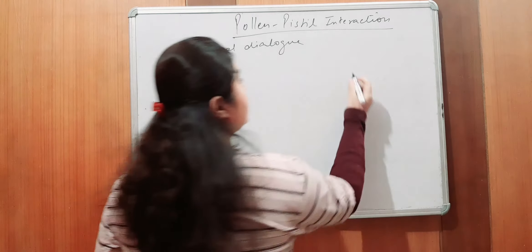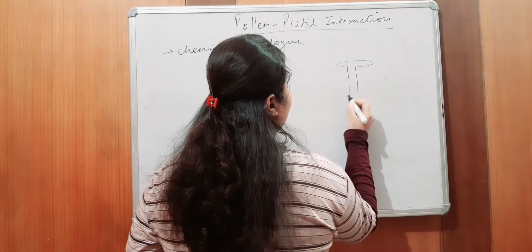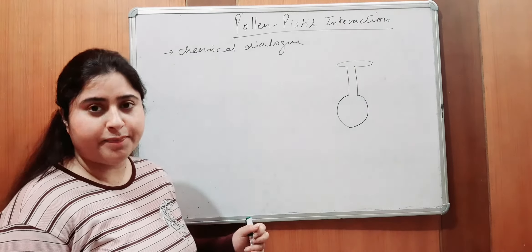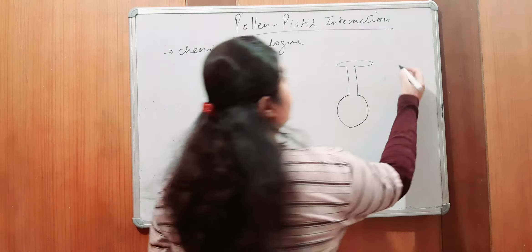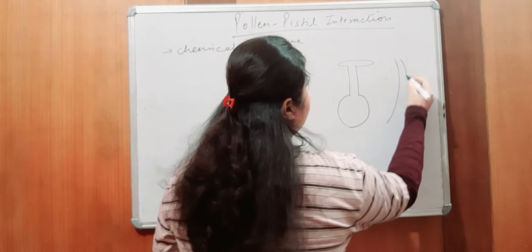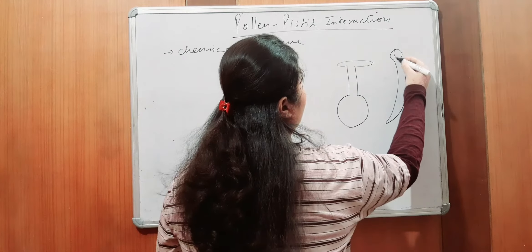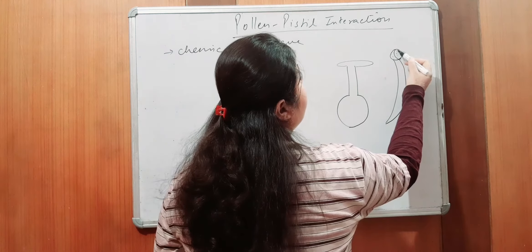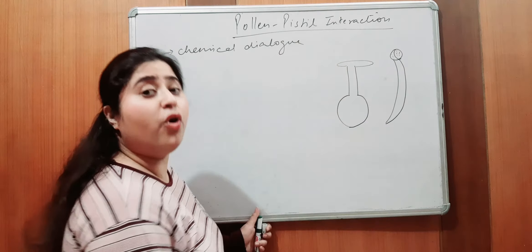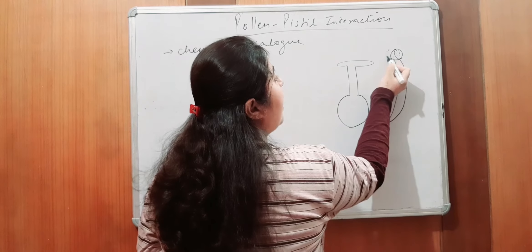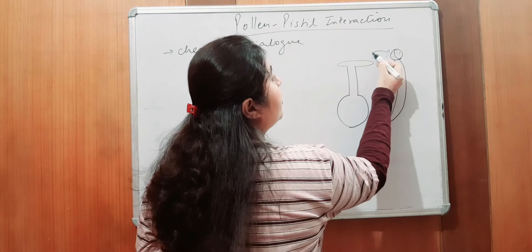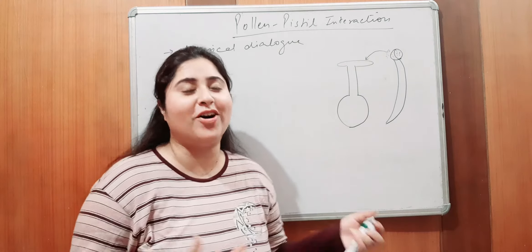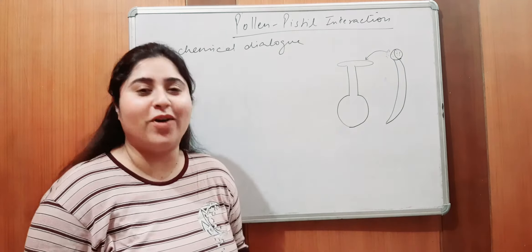Suppose this is the pistol. Stigma elongated style and the basal swollen portion is the ovary. Right? On the other hand, suppose this is the male portion. Stamen and the bilobed anther. So, obviously, it will be having some pollen grains inside it. When those pollen grains will be shed out and transferred to the stigma of the flower, that process is called as pollination.